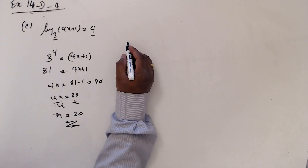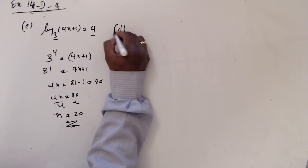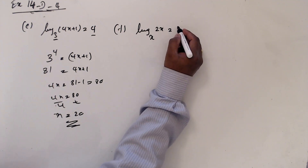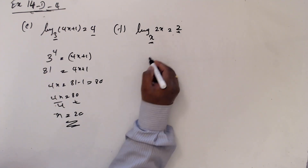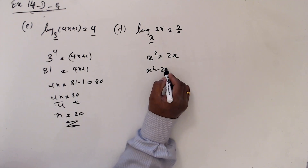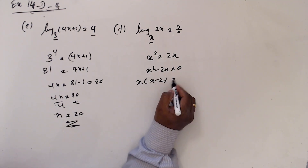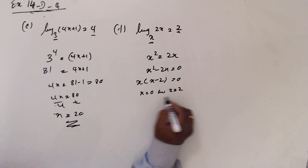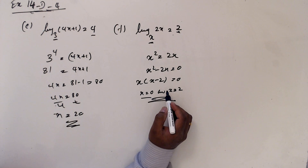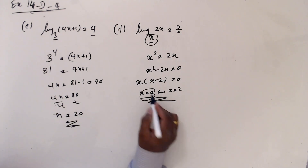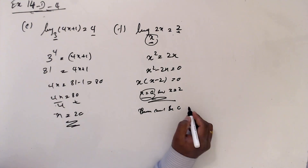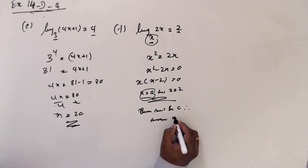F and D: log base x of 2x equals 2 — this is the base, this is the power. x squared equals 2x. So x squared minus 2x equals 0, x is common, x(x minus 2) equals 0, so x equals 0 or x equals 2. But we have to check — base cannot be 0. Hence the answer is x equals 2.